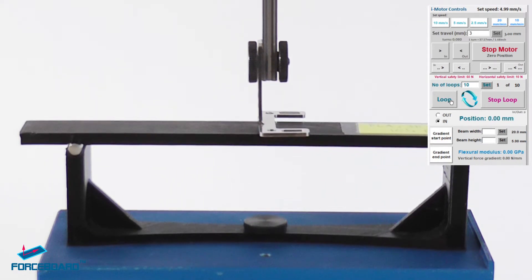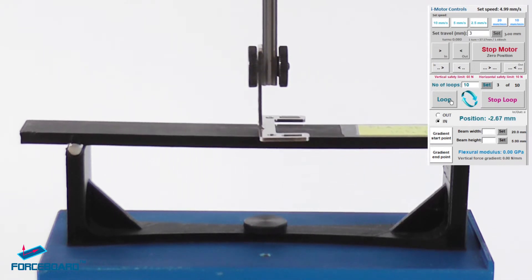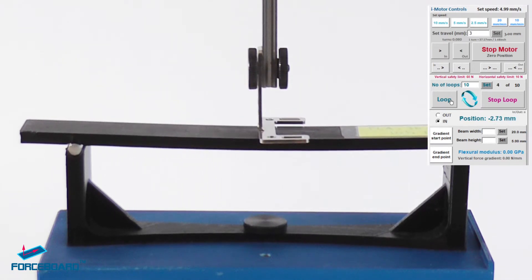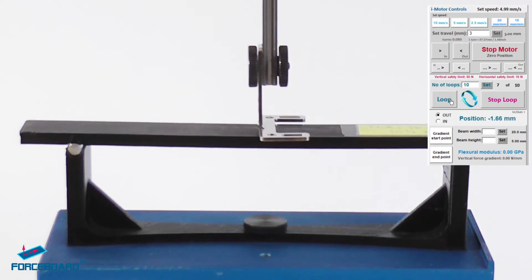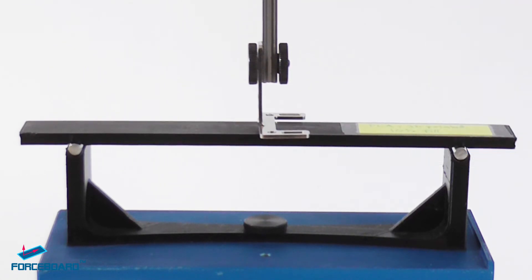Force Board can do loop testing for any number of cycles. It is one of the fastest tensile compression testers in the world today. It is the only tensile compression tester that operates in 1D or 2D which is completely portable. Force Board is really easy to use and it will not let you down.